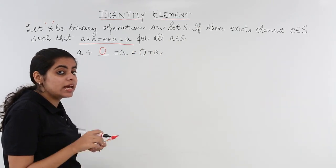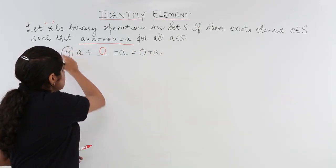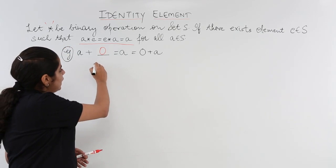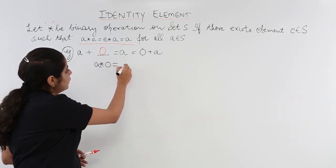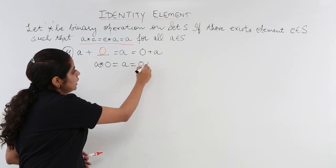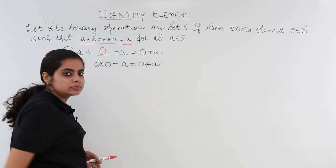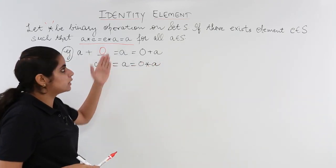Similarly I can say that 0 plus a is also equal to a. That means here what we have done. Here in this example we have applied a star 0 is equal to a which is equal to 0 star a, which is same what the definition says.